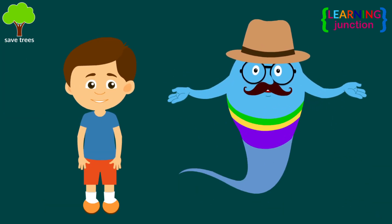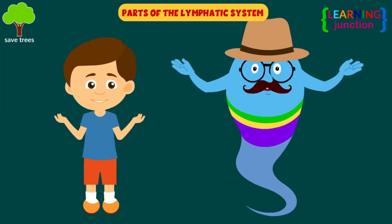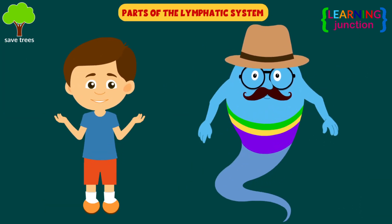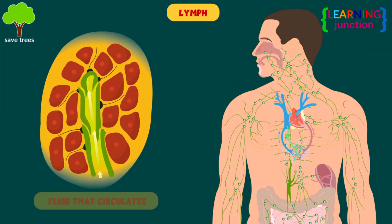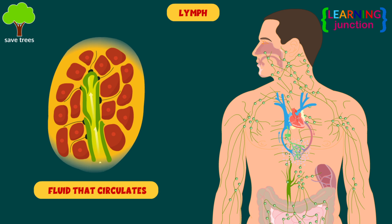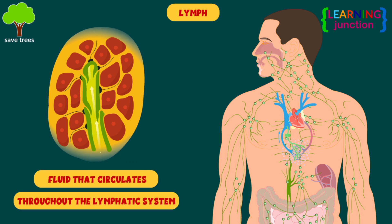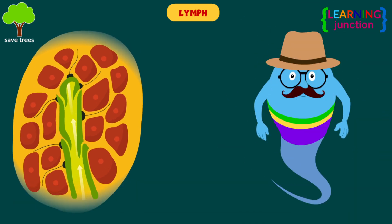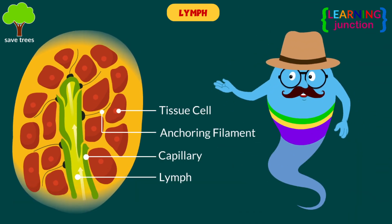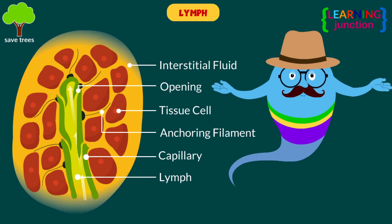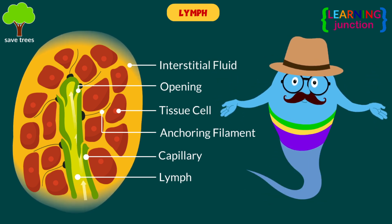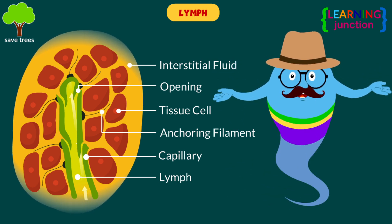Let's take a look at the parts of the lymphatic system. Lymph is the fluid that circulates throughout the lymphatic system. The lymph is formed with an interstitial fluid that is collected through the lymph capillaries.